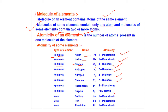Sulfur S8 is polyatomic — poly means many, so many atoms of sulfur combine together. Sodium (Na) is monoatomic. Mono means only one atom; di means two atoms combined together to form a molecule.